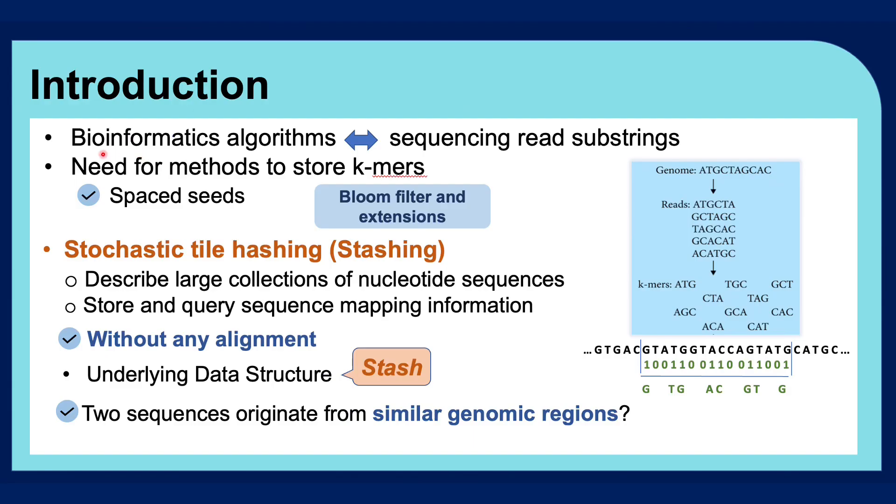With the decrease in sequencing costs over the last decade, many bioinformatics algorithms have been based on storing and identifying sequencing read substrings. Hence, there has been a growing need for methods to store k-mers and more specifically spaced seeds, which can tolerate mismatches.